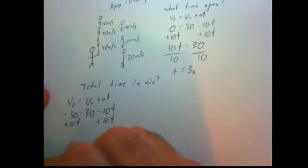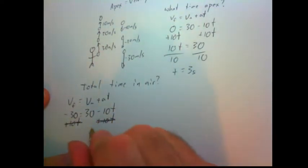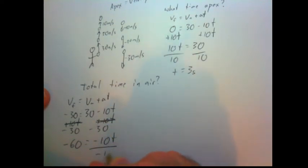Let's not add 10t to each side because that's not combining like terms. Let's instead subtract 30 from each side. So I have negative 60 equals negative 10t. Divide both sides by negative 10. We get 6 seconds equals t.